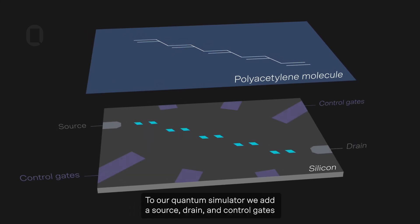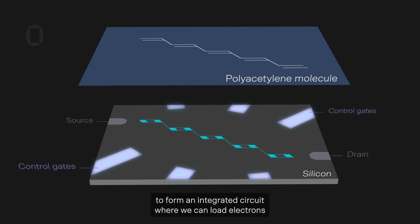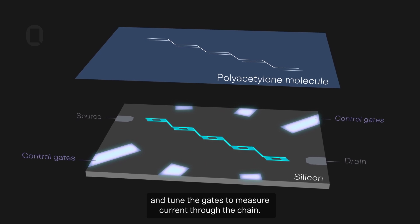To our quantum simulator, we add a source, drain, and control gates to form an integrated circuit where we can load electrons and tune the gates to measure current through the chain.